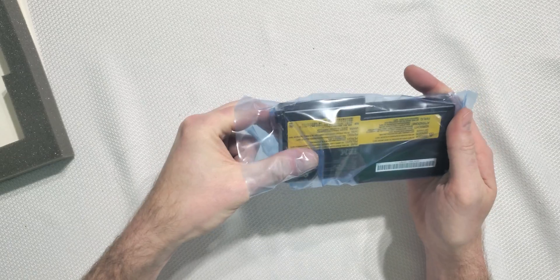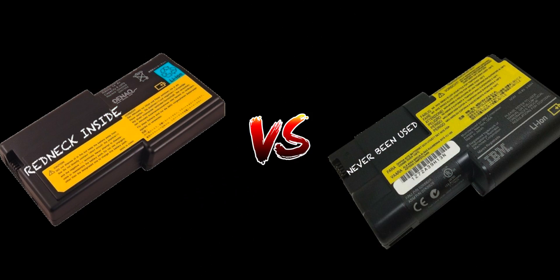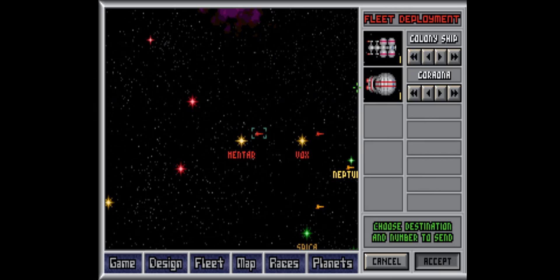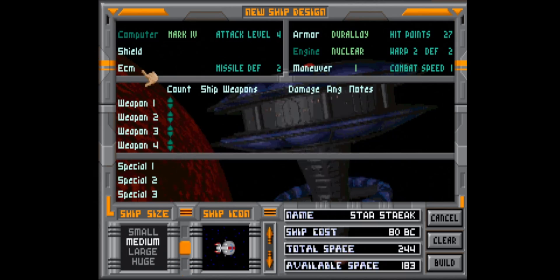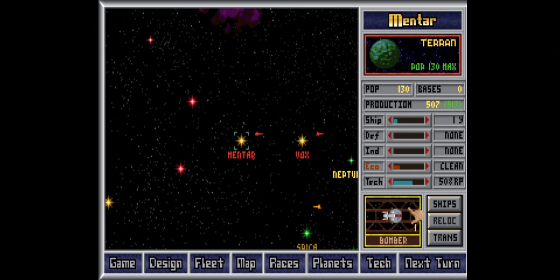And finally, the moment we have all been waiting for. Will this kludge of redneck-enhanced electrons beat out a brand new 20-year-old battery? To find out, I'll play Master of Orion in DOSBox until the unit taps out. The first will be the refurb unit. And the refurb unit scored 3 hours and 46 minutes.